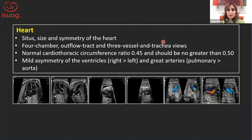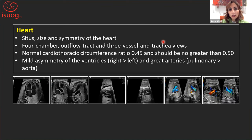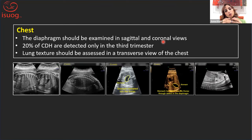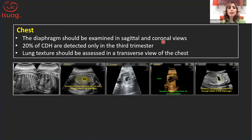The heart is assessed the same as in the second trimester: site, size, symmetry, four-chamber view, outflow tracts, and three-vessel trachea view. The normal cardiothoracic circumference ratio at this gestation is about 0.45 and should not exceed half the chest size. It is a common finding to have mild asymmetry with the right ventricle slightly larger than the left, or the pulmonary artery slightly larger than the aorta — but a significant difference would require a fetal echo. For the chest, we look at the diaphragms because about 20% of congenital diaphragmatic hernias are detected only in the third trimester, and we assess lung texture.